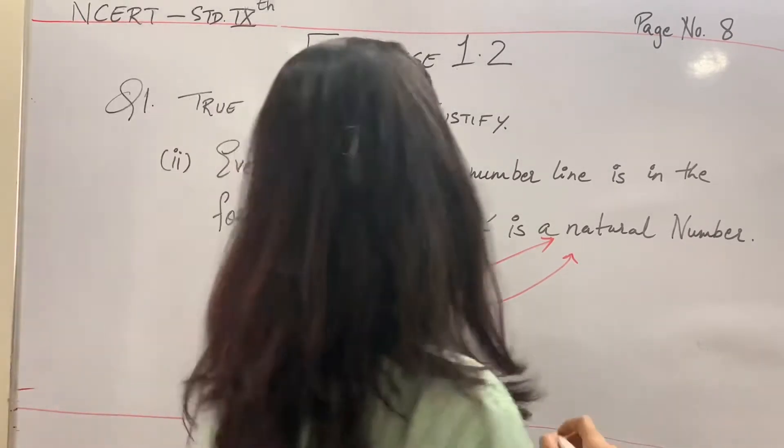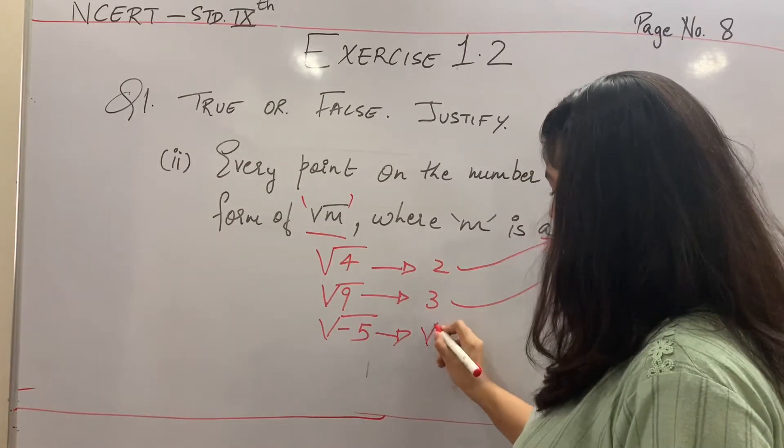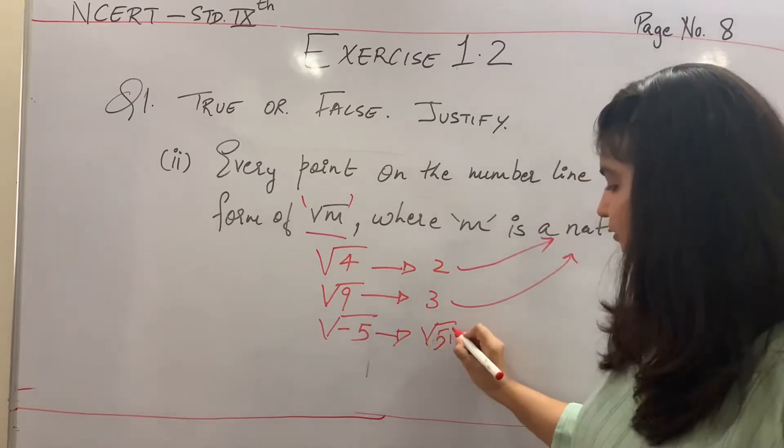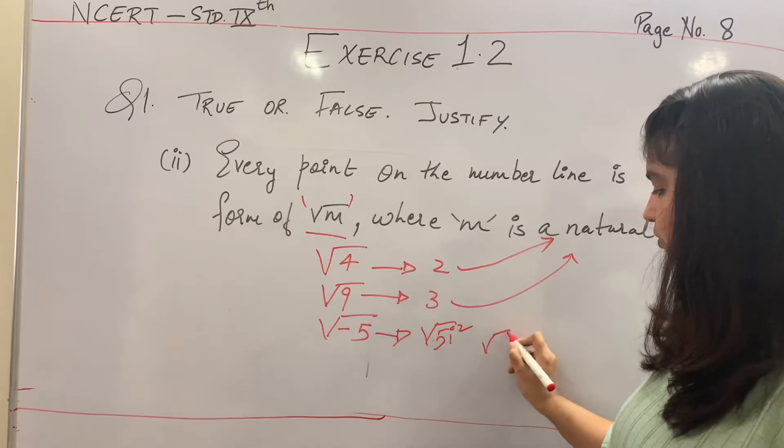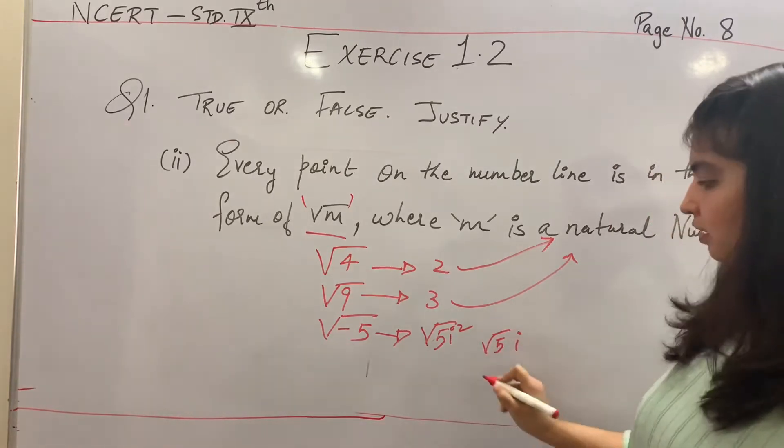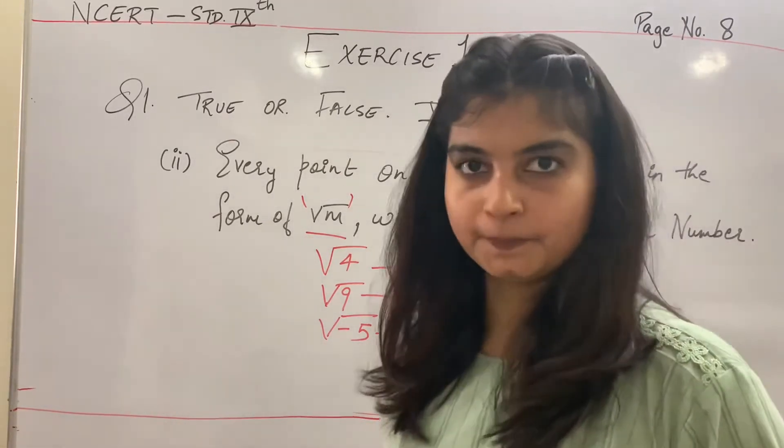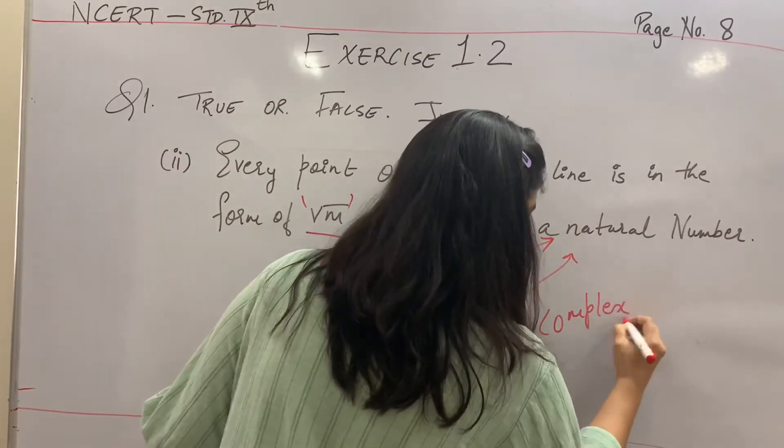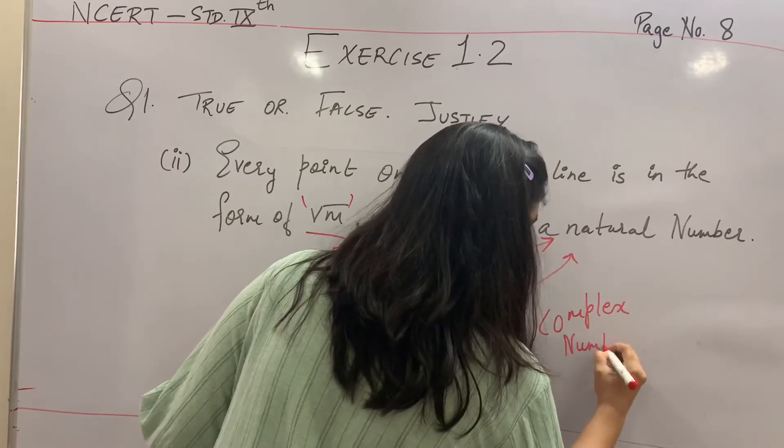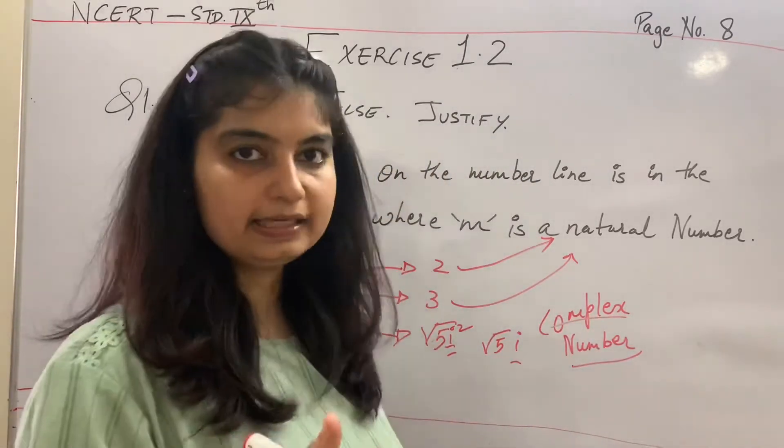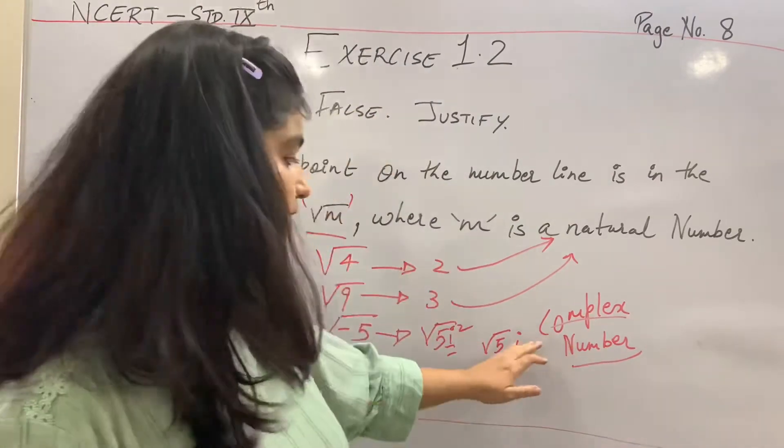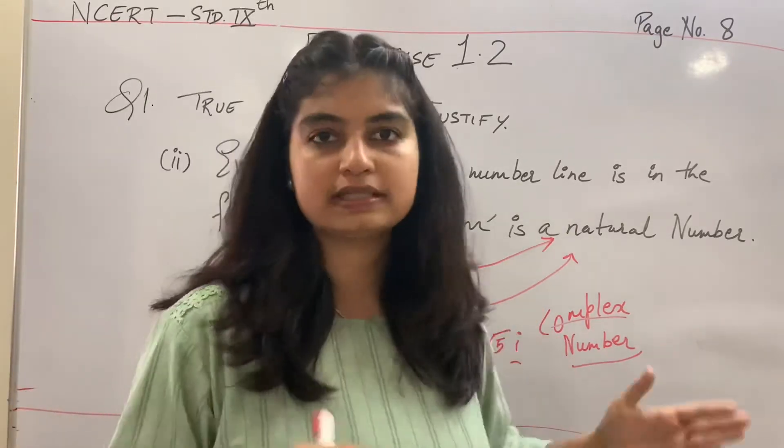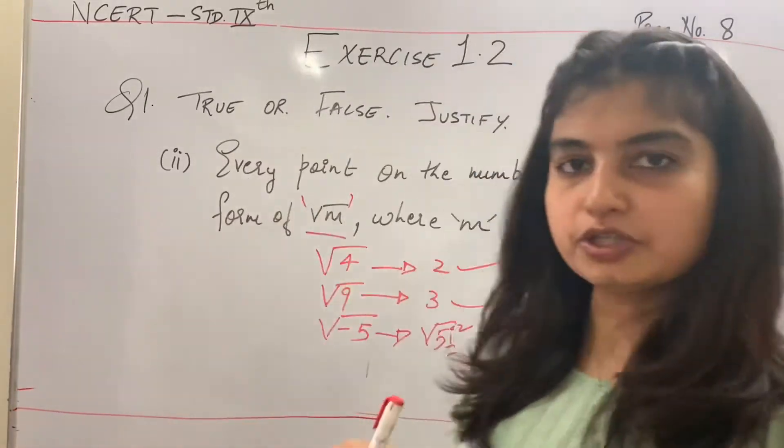But agar koi aisa example lete hain ke root of minus 5, toh yeh kya banega? Yeh is a complex number. This is a complex number which could be written in the form of minus root of 5 i square, jo ban jata hai root of 5 i. Abhi aap wonder karo ke what is this i? Well, this is a complex number. It is known as a complex number jiske baare mein aap detail mein padhoge in your higher standards.